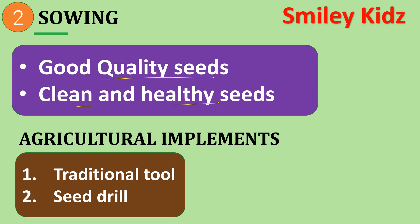The agricultural implements used in sowing are the traditional tool and the seed drill. The traditional tool used for sowing seeds is shaped like a funnel. Seeds are filled into the funnel and passed down through two or three pipes with sharp ends that pierce the soil and place seeds there. Nowadays the seed drill is used with tractors, sowing seeds uniformly at proper distances and depths, and ensuring seeds get covered by soil after sowing.